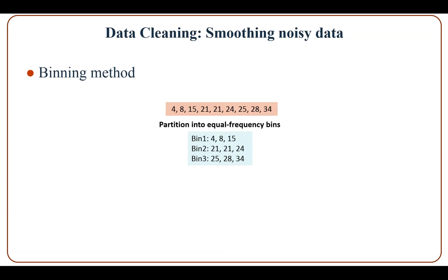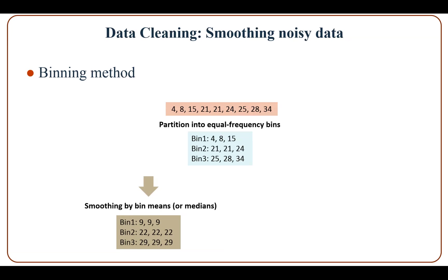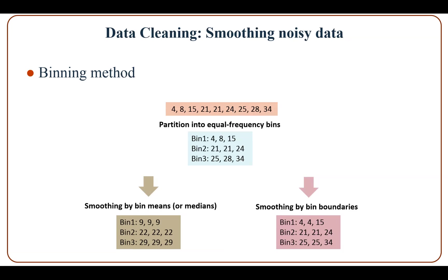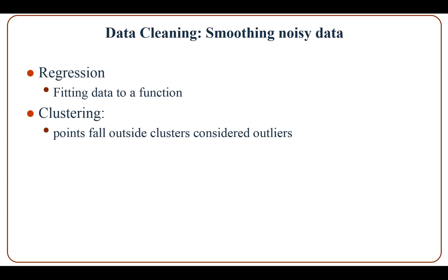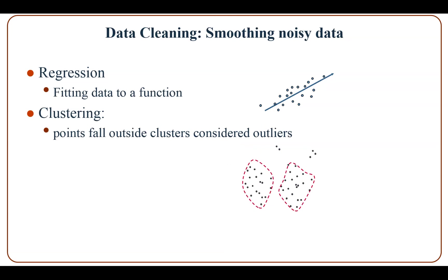Noisy data can be smoothed using the binning method. For example, given sorted attribute values — 4, 8, 6, 15, 21, 21, 24, 25, 28, and 34 — the first step is to partition into equal-frequency bins, and then either smooth by bin means or median, or smooth by bin boundaries. Other more sophisticated methods are regression, which fits data to a function, and clustering, in which points far outside a cluster are considered outliers.